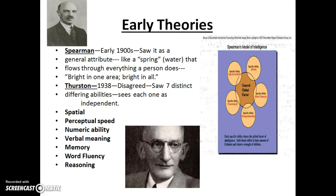In Spearman's view, intelligence goes through everything a person does — if they're bright in one area, they're bright in all. Thurston, in 1938, disagreed. He was the first to come up with seven distinct different abilities, seeing each one as independent. In other words, you could have one and not have another.